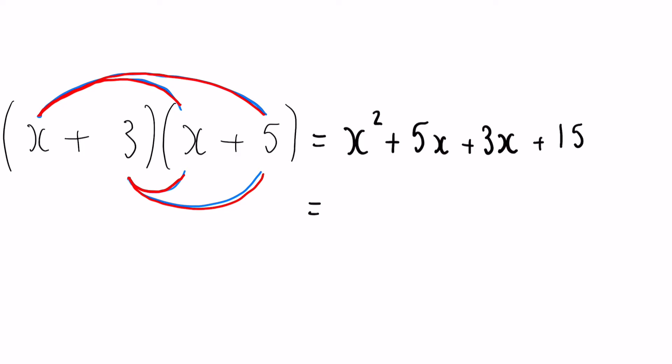You may notice that these two numbers here we can actually simplify down a little bit more. So 5x plus 3x gives us 8x. We would write this as our final answer: x squared plus 8x plus 15.